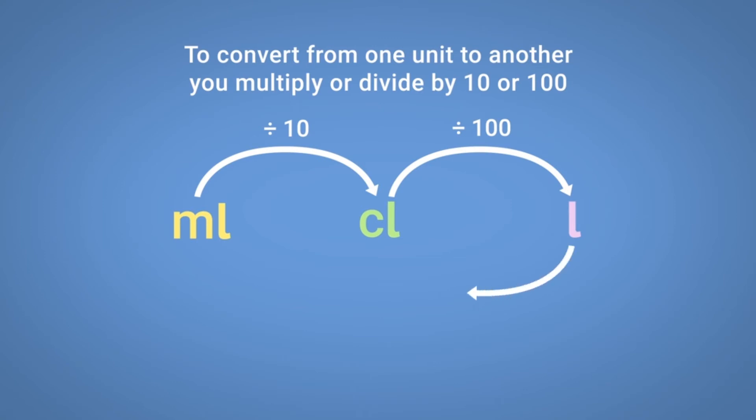To convert from litres to centilitres multiply by 100. And from centilitres to millilitres multiply by 10.